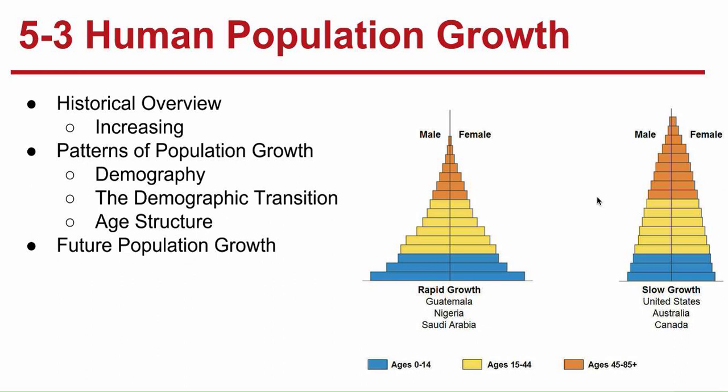When we see countries with rapid growth, such as Guatemala, Nigeria, and Saudi Arabia, we see a greater number of people in the lower age groups. When these people get older, there will be even more children. The United States has a much slower growth rate, but underdeveloped countries going through the demographic transition are expected to almost double in population size in the next 30 years.